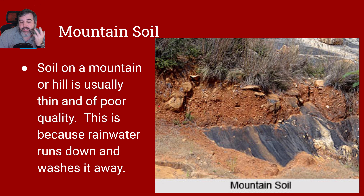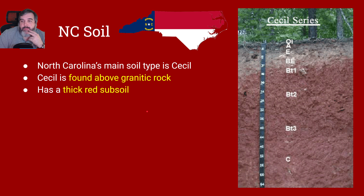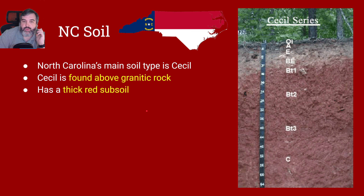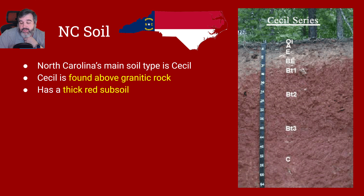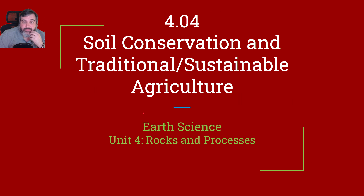Mountain soil is typically very poor quality because rainwater constantly washes it away. In North Carolina, our soil type for the most part is called Cecil. Cecil is found above granitic rock and has a very thick red subsoil. Those of you at Granville Central know we have a lot of red clay around here.